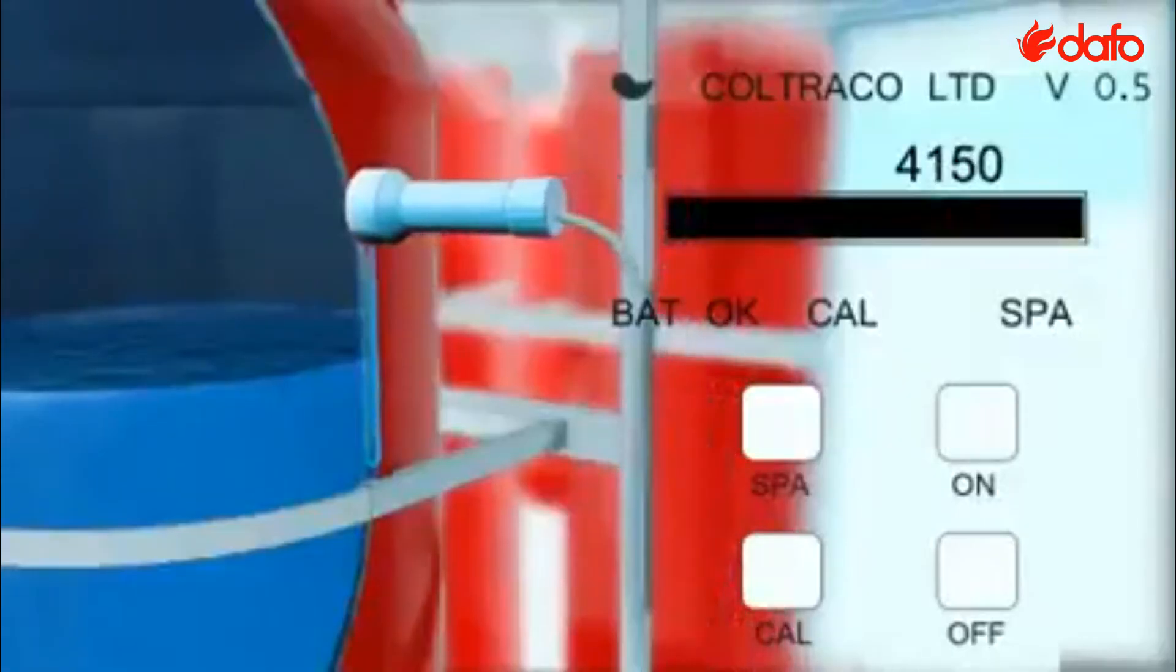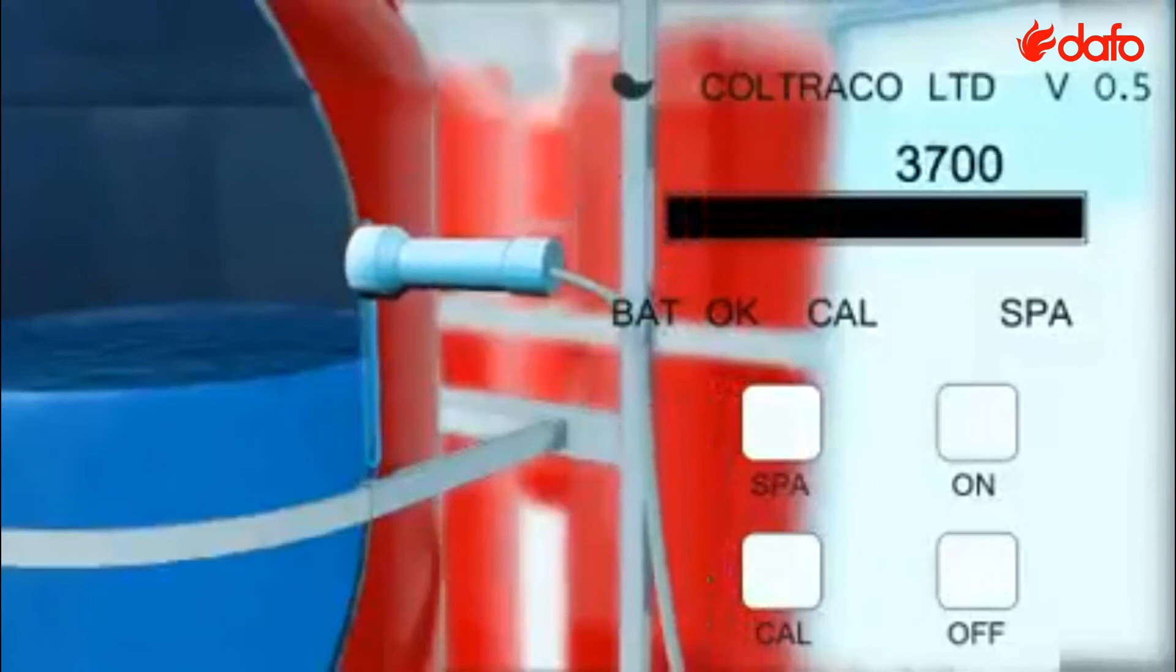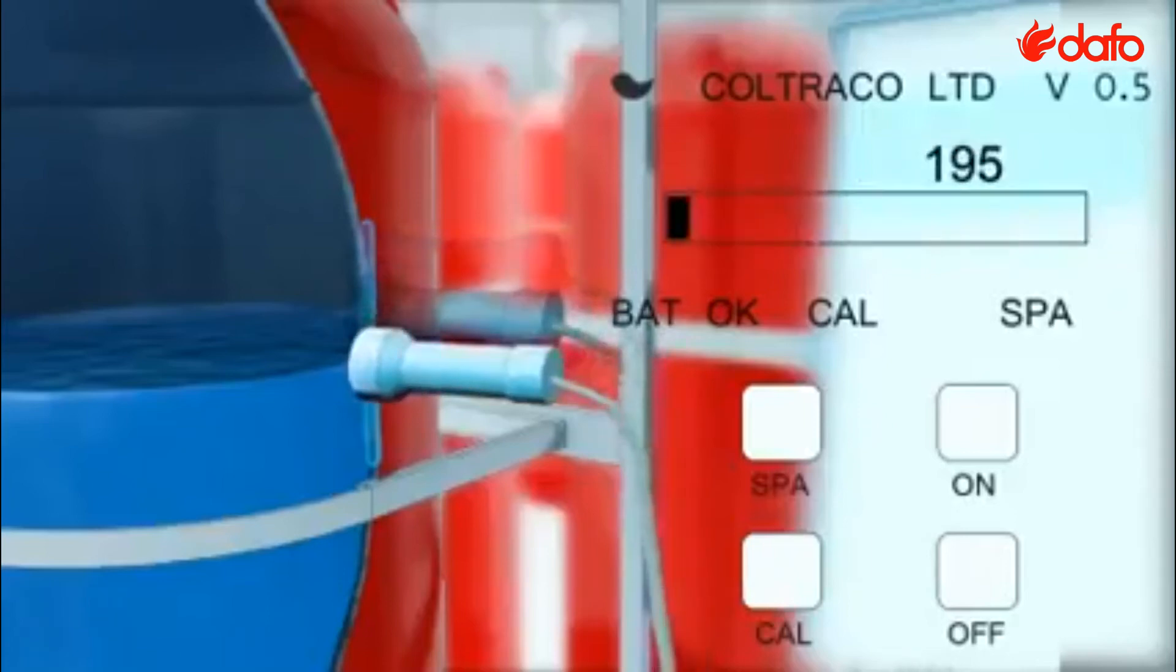Move the sensor down the cylinder in small 2-inch steps, allowing the reading to stabilise for a few seconds at each stage, ensuring the white spot on the sensor is facing upwards and a good connection is being made on the cylinder.